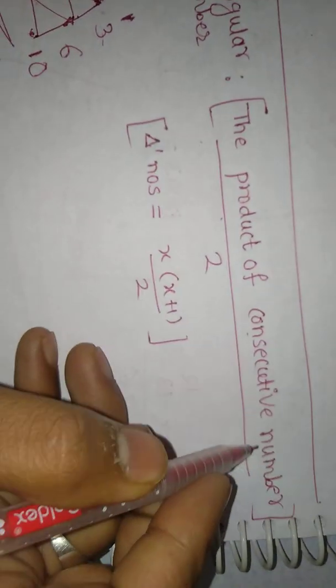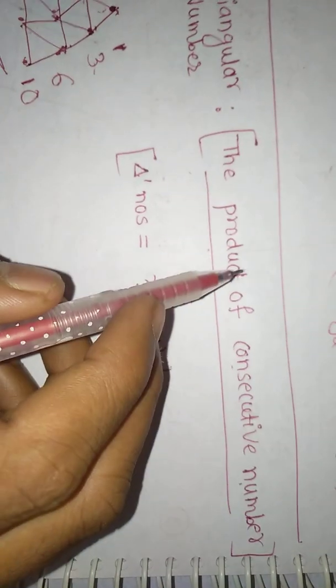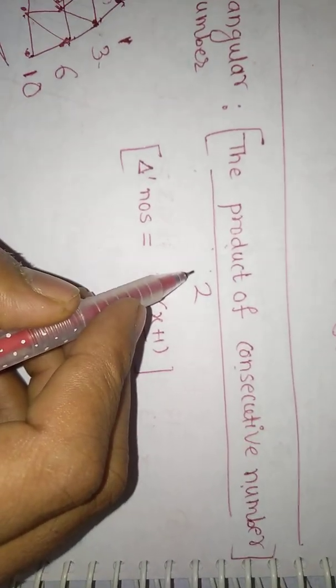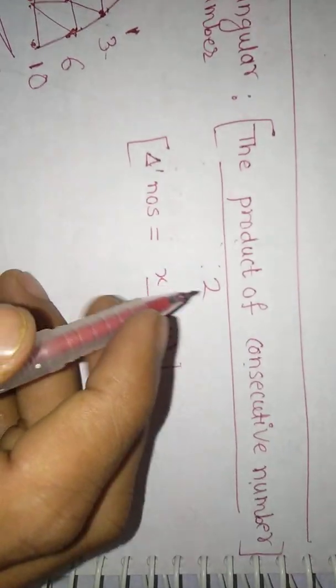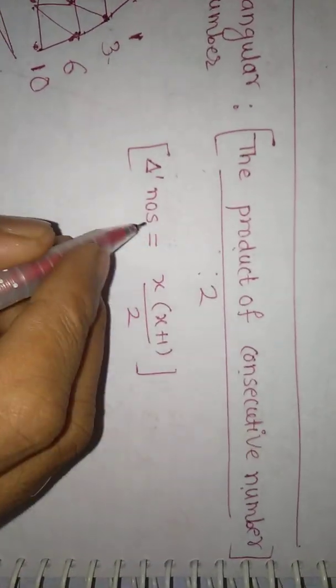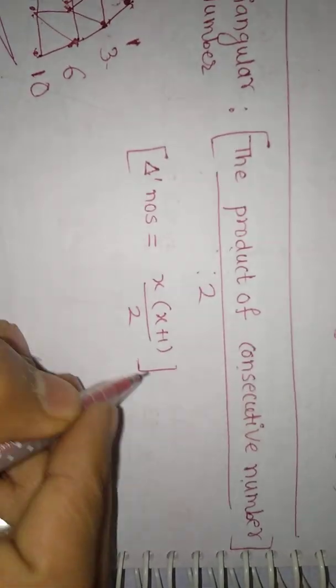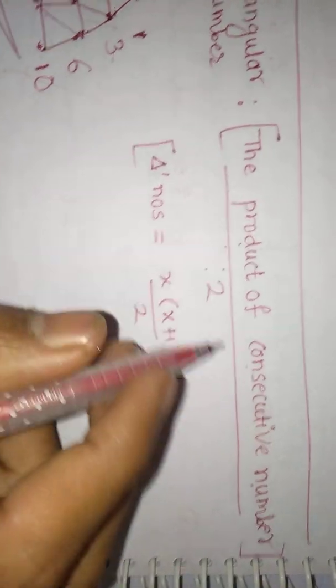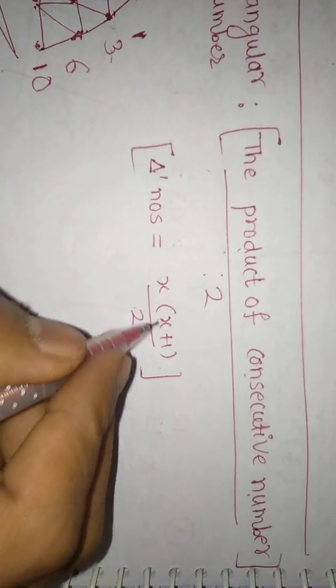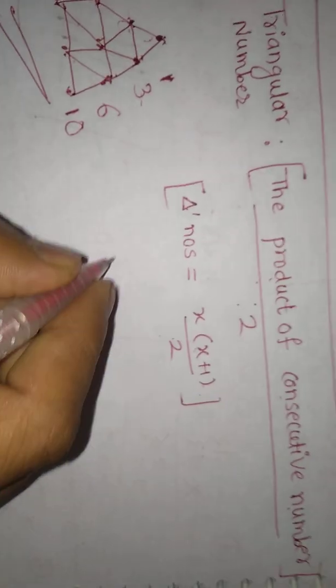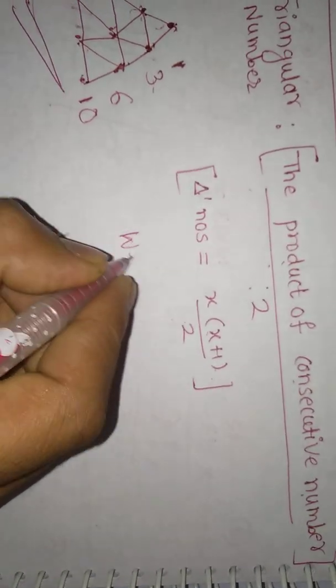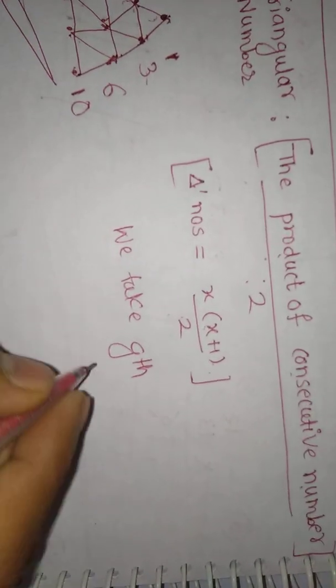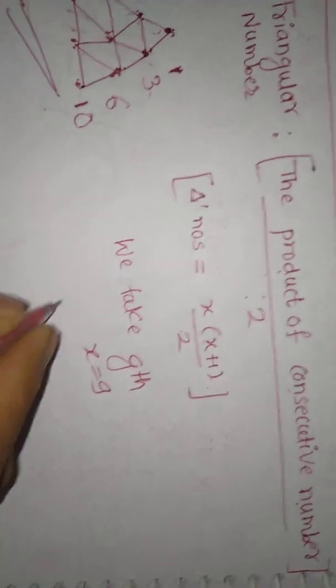The first definition of that triangular number is: triangular number is nothing but the product of consecutive numbers upon two.